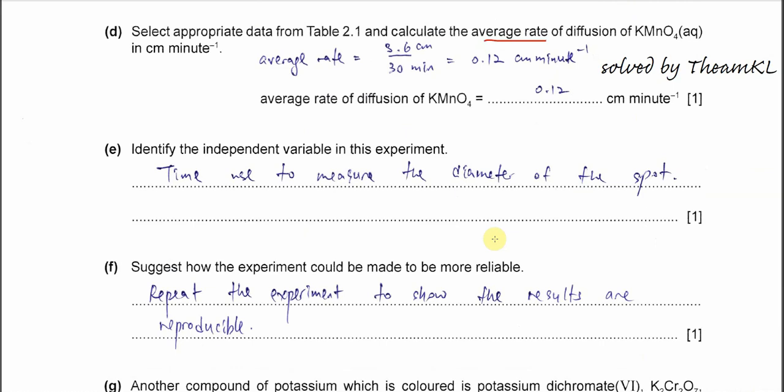Part E: identify the independent variable in this experiment. The independent is the one that we can choose. Once we choose, then the dependent variable needs to follow. In this experiment, we can choose different time to measure the diameter. When we use different time, the diameters that form are actually different. So this is a very easy question.